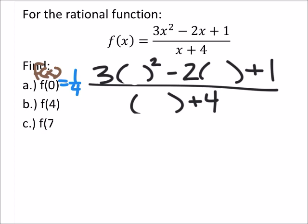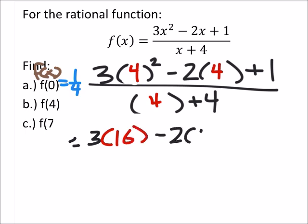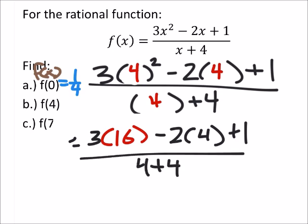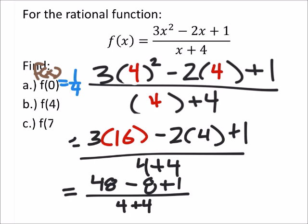So let's try this next example where we have f of 4, so we're going to replace all the x's with 4, like this. And then just regular order of operations stuff. Here we've got 3 times 4 squared is 16. Then we've got minus 2 times the 4, plus 1 over 4 plus 4. And then we can do multiplication. 3 times 16 would be 48. Minus 2 times 4 is 8, plus 1.